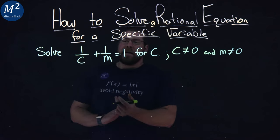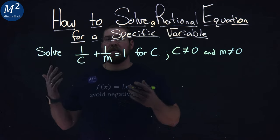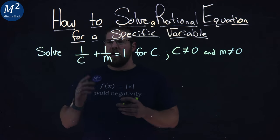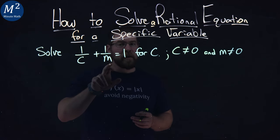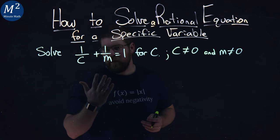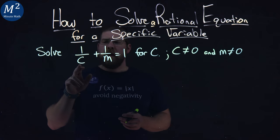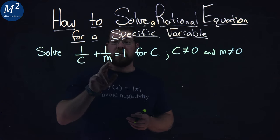Now we want to see how we can get c by itself. Well, the least common denominator across the board here - I have a c here, I have an m here, and I have 1 underneath the 1. The least common denominator is a combination of c and m, c times m.